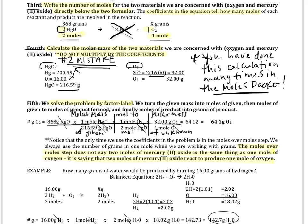Number 2 mistake I see people making on this worksheet. They look at the balanced equation and they say, oh, there are 2 mercury oxides. So, they try to multiply this number here by 2. Wrong. Don't do that.